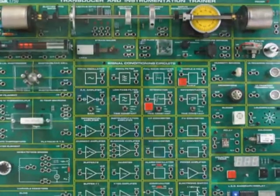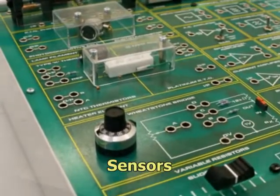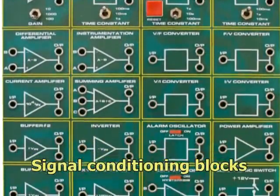The open-panel access uses 4mm connection for configuring circuits from a choice of 24 sensors, 12 output devices and 21 signal conditioning circuit blocks.